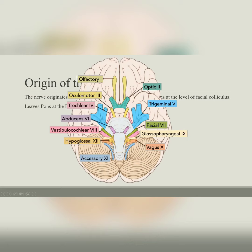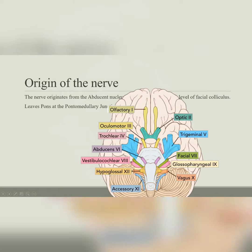Here is the diagram showing the exit of all cranial nerves from the brain. You can see the abducens nerve exiting between the pons and the medulla at the pontomedullary junction. The swelling seen anteriorly is the pyramid. The abducens nerve emerges between the pyramid of the medulla oblongata and the basal surface of the pons at the pontomedullary junction.